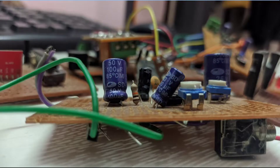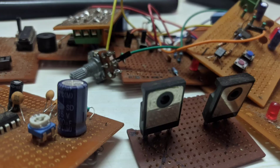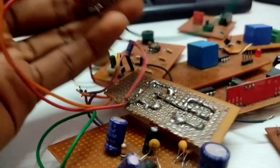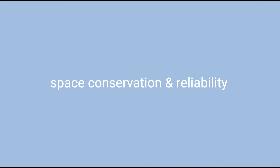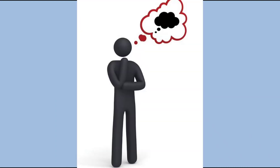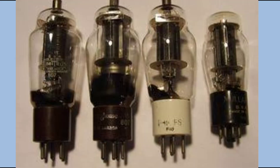There are two main disadvantages of a discrete circuit. First, a large electronic circuit may have a very large number of components, so the discrete assembly will occupy a very large space. Second, the components are joined by soldering, which causes a problem of reliability.